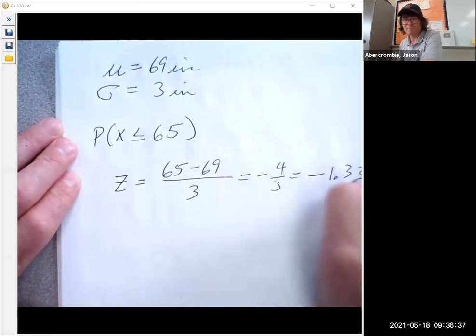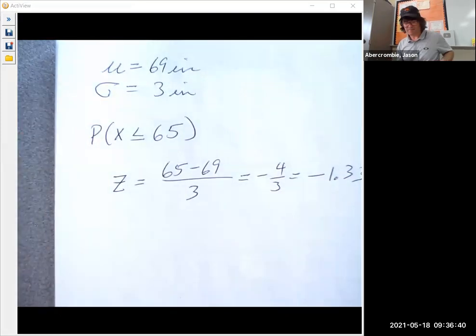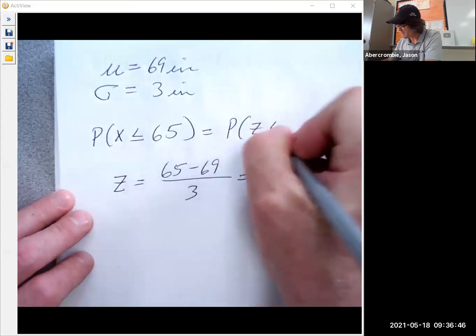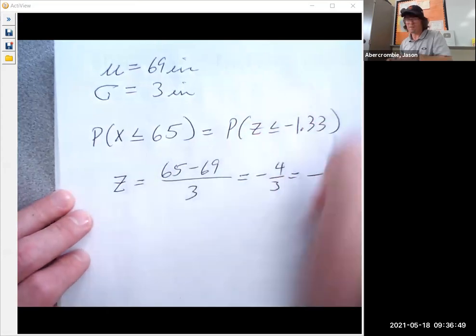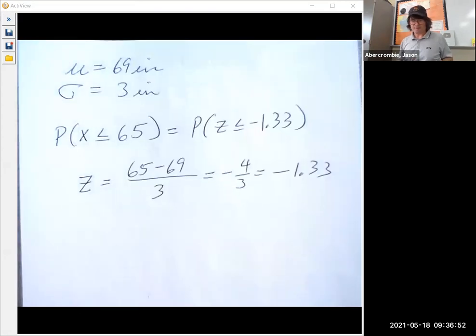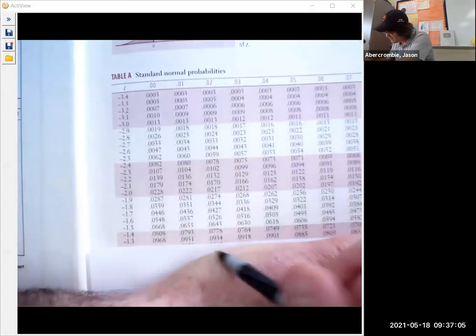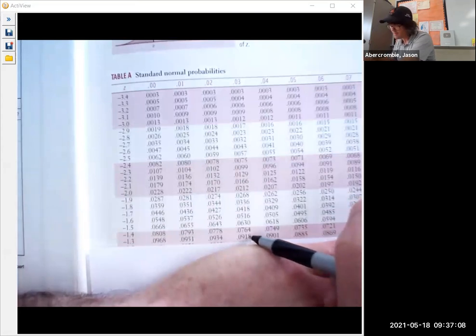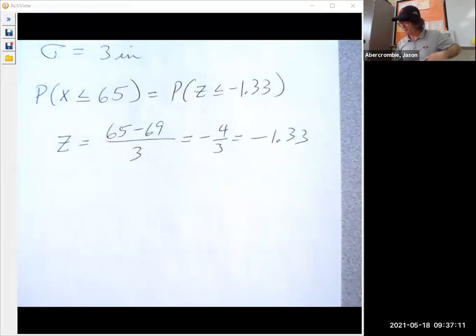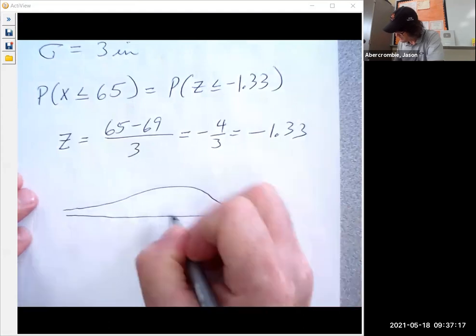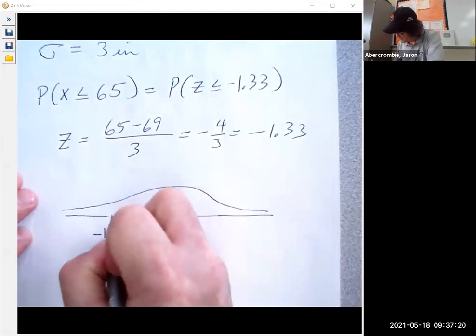So I'm going to go find that in my table. That's the same as Z is less than or equal to negative 1.33. And so we're going to go to my negative side this time. Here's negative 1.3, and here's 0.03. And you can see 0.0918 is my number right there. So if you look at a Z on a standard normal table, here's zero, here's negative 1.33, this is 0.0918.